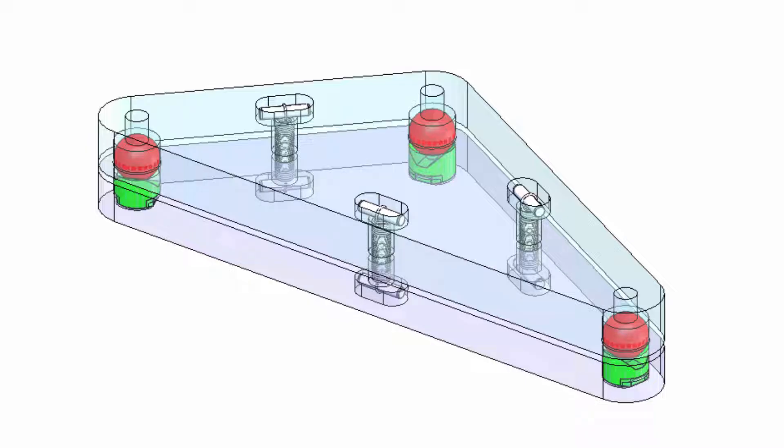Although the kinematic mount theoretically has one unique fully constrained position that it should assume, various effects such as friction, elastic deformation, or contamination can prevent it from achieving or returning to that position after each assembly.